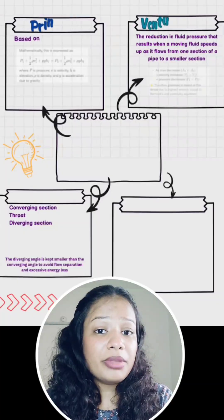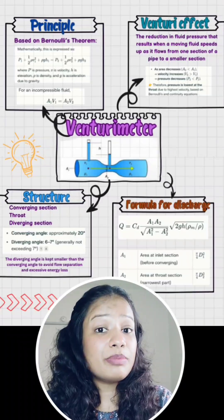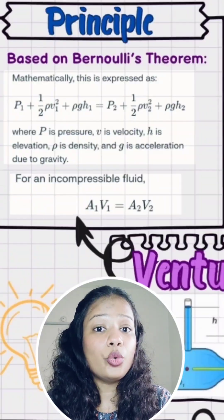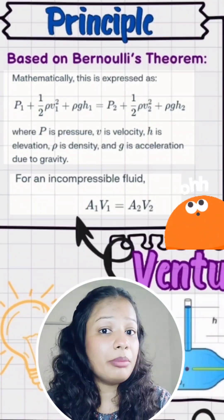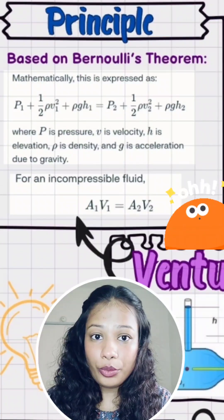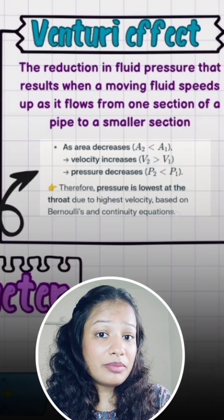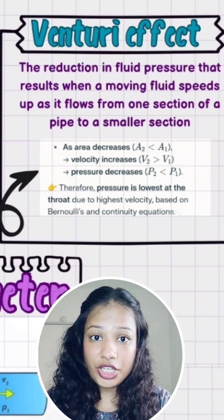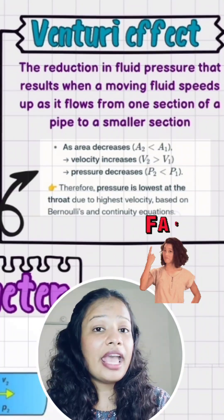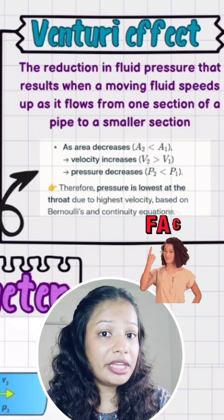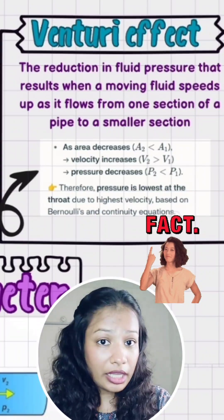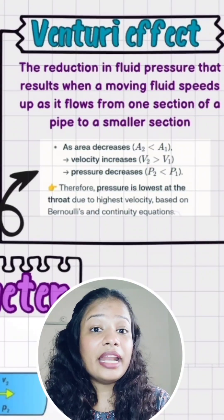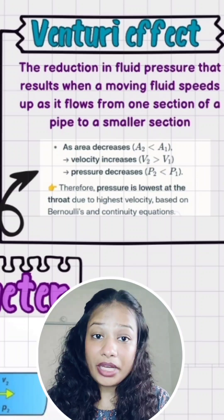Number 1: the Venturi Meter is based on Bernoulli's Principle, which states that the total energy will remain constant through the flow of the fluid. With this principle, we can relate area, velocity, and pressure. As the area decreases in the Venturi Meter, the velocity increases and hence the pressure decreases — meaning that at the throat section, the pressure will be minimum.